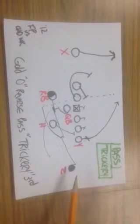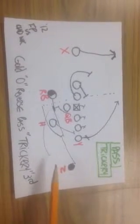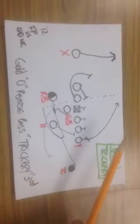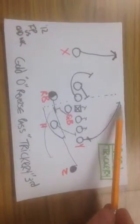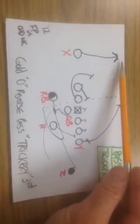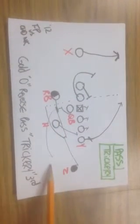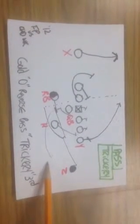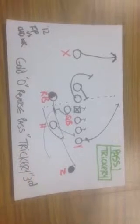We're going to do the fake sweep reverse pass and we have three opportunities. I would say that our number one choice is our Y tight end followed by our X and maybe a throwback to the quarterback for our third look or still take off and run. Anyway, just wanted to show you another trick play.